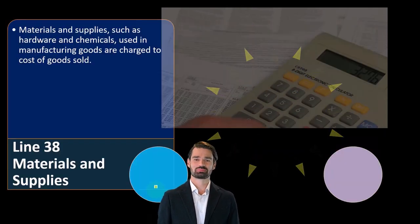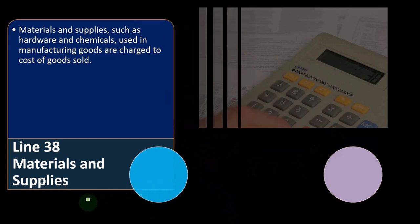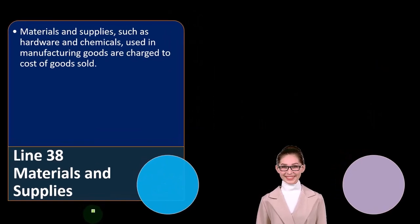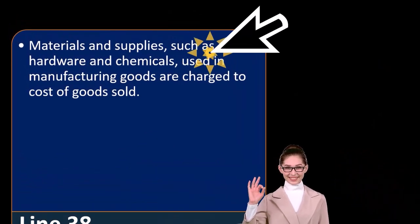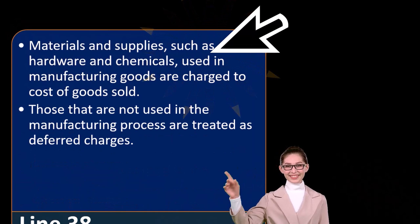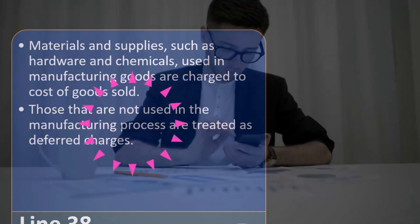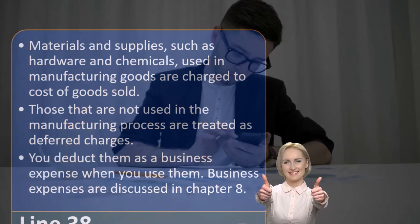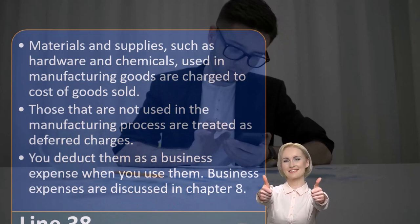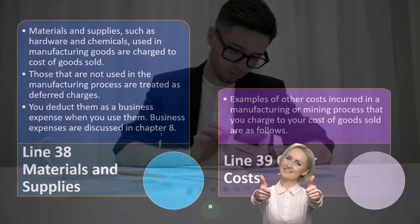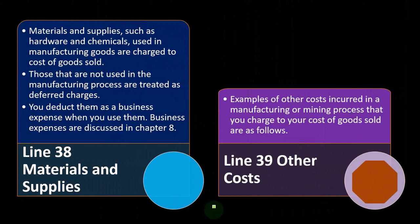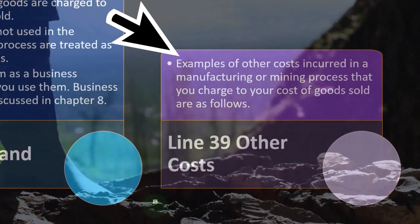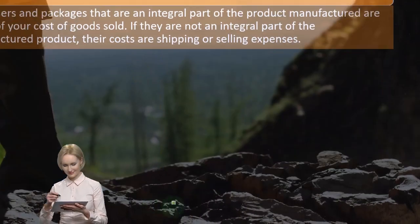Line 38, materials and supplies. Materials and supplies such as hardware and chemicals used in manufacturing goods are charged to cost of goods sold. Those not used in the manufacturing process are treated as deferred charges and deducted as a business expense when you use them. Line 39, other costs. Examples of other costs included in a manufacturing or mining process charged to cost of goods sold are as follows.